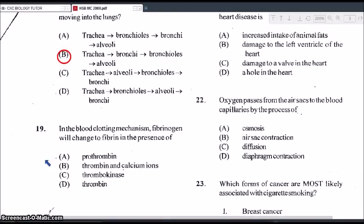Question 19. In the blood clotting mechanism, fibrinogen will change to fibrin in the presence of... Is it A, prothrombin, B, thrombin and calcium ions, C, thrombokinase, or D, thrombin? So the correct answer for this one will have to be both thrombin and the calcium ions. So the thrombin and the calcium ions are both needed to help convert that soluble fibrinogen into the insoluble fibrin, which will form the network that will trap the cells in the blood and stop the blood from flowing out. So that's how the blood clotting would be carried out.